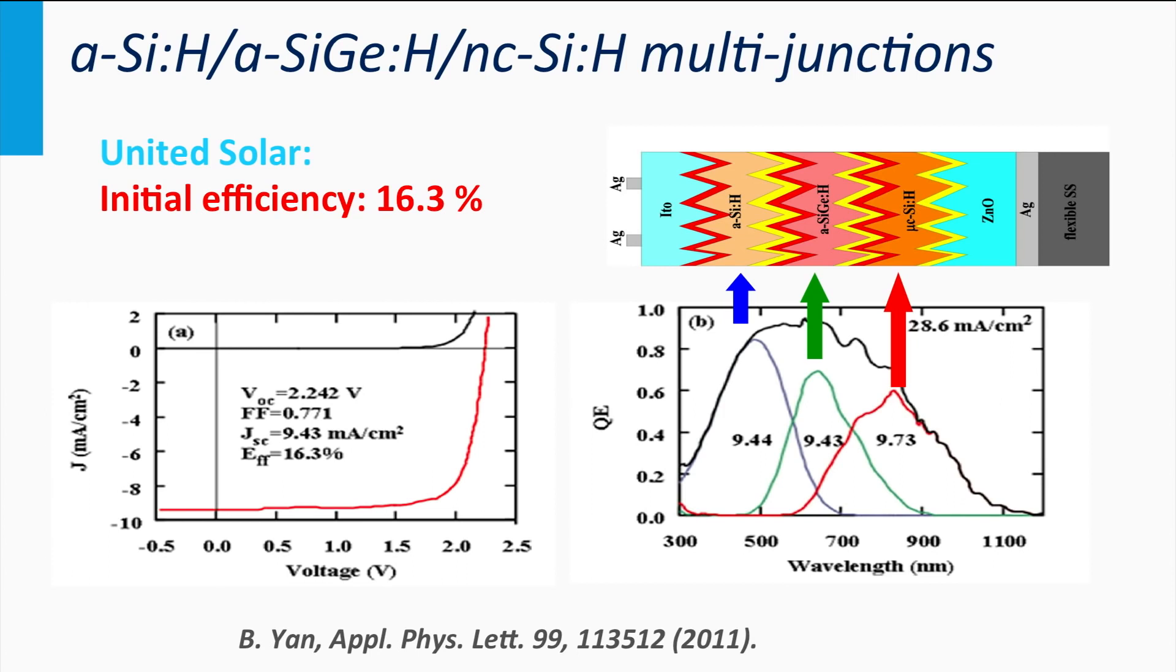Consequently, optimizing thin-film silicon multi-junction solar cells is a complex interplay between the various thicknesses and light-trapping concepts used in the solar cell.